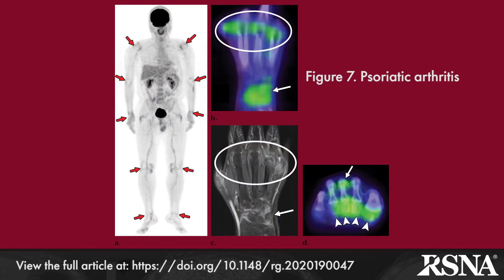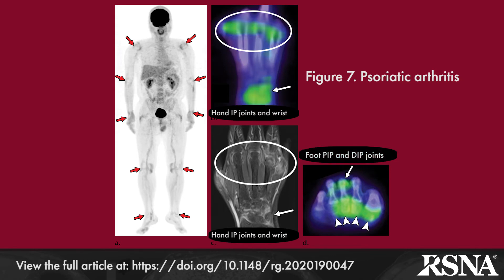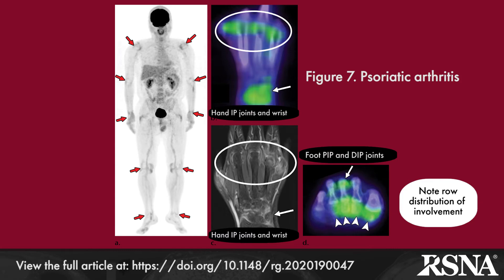Psoriatic arthritis is another spondyloarthritis seen coincident with or following a diagnosis of psoriasis. Asymmetric oligoarticular arthritis of the distal hands and feet in a ray pattern, or involving a single digit, is most common, followed by SI joint and spine involvement.